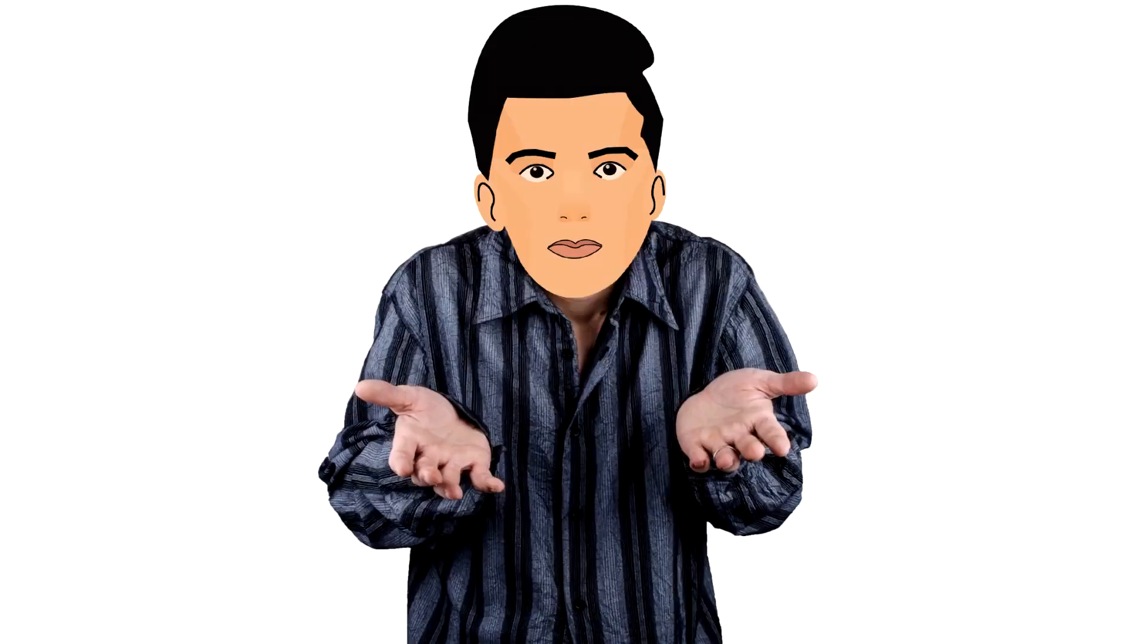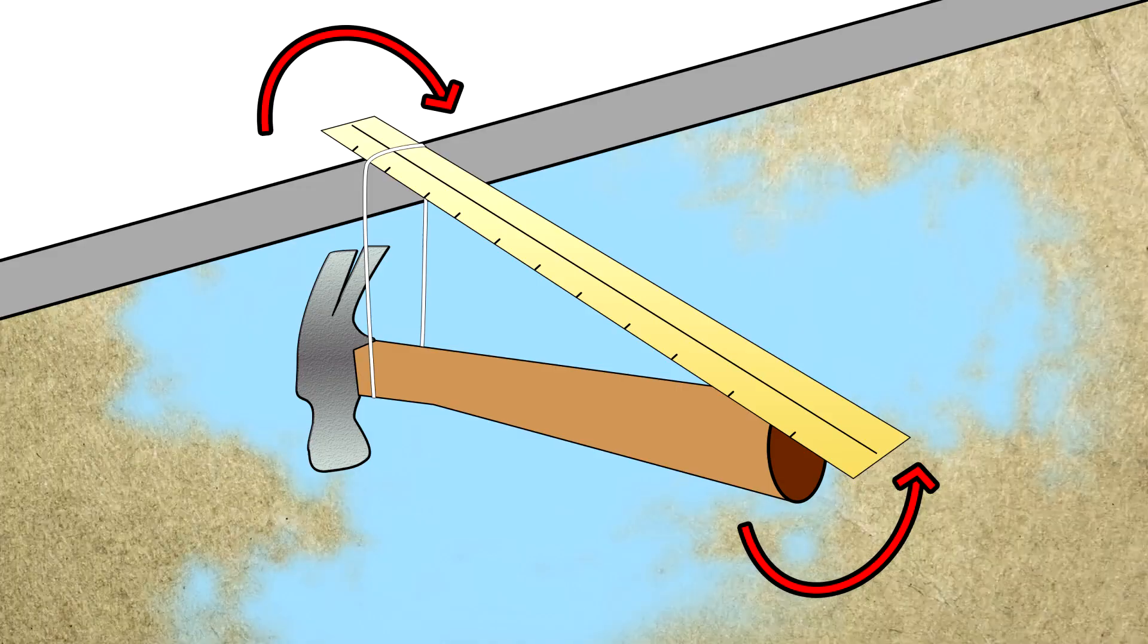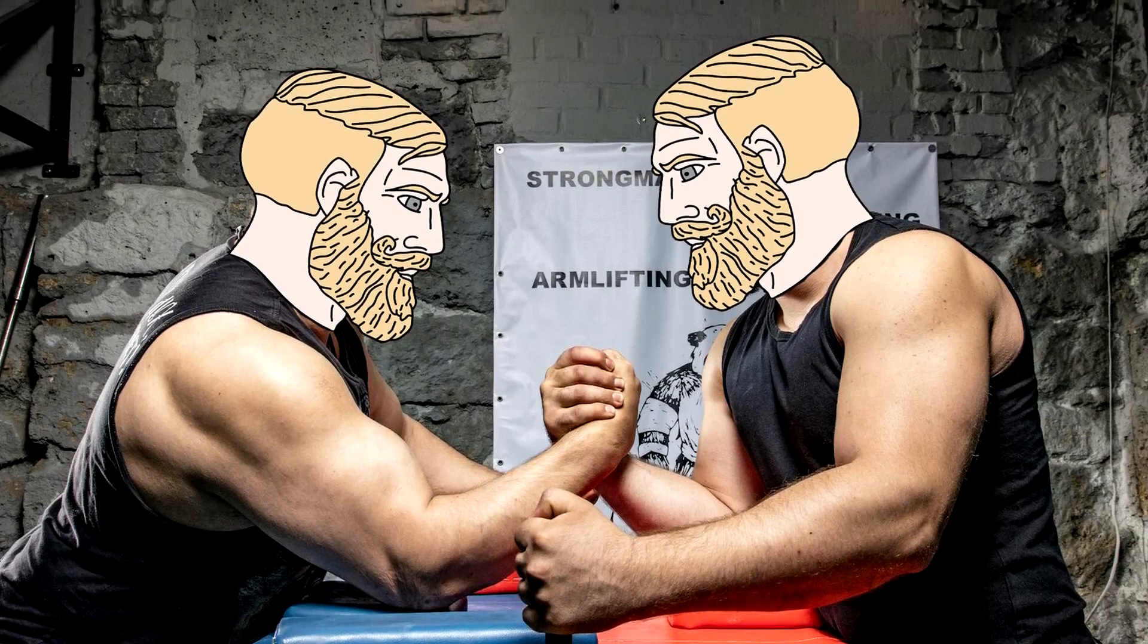In simpler terms, the ruler wants to rotate down. But if that happens, the grip of the hammer would need to rotate up against gravity. Thus, these two forces end up cancelling out.